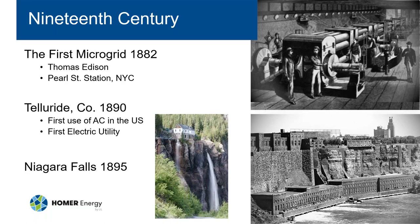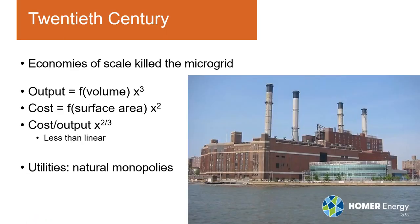Economies of scale ultimately killed the microgrid in the early 20th century. The output of something like a steam boiler is a function of its volume — a cube function — but the cost is a function of surface area, a square function. So cost over output scales as a power of two-thirds, which is less than linear. This means doubling the size of a boiler increases output eightfold but cost only fourfold, driving a trend toward bigger and bigger systems throughout the first half of the 20th century.